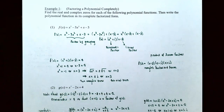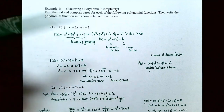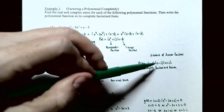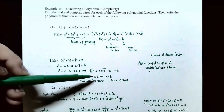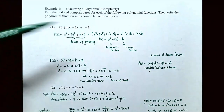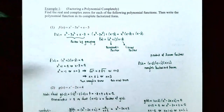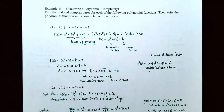We can rewrite f(x) as a product of linear factors using both the real and complex zeros: f(x) = (x − 3)(x − i)(x + i). This is the completely factorized form from the complete factorization theorem.